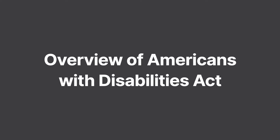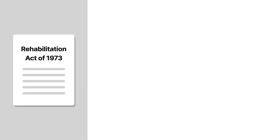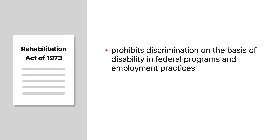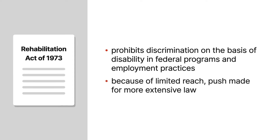Let's first start with a little bit of history and overview of the Americans with Disabilities Act. Prior to the passage of the ADA, the main federal law that provided protections to people with disabilities was the Rehabilitation Act of 1973. The Rehabilitation Act prohibits discrimination on the basis of disability in programs conducted by federal agencies, in programs that receive federal financial assistance, in federal employment, and in the employment practices of federal contractors. But because of this limited federal jurisdiction link and substantive reach,